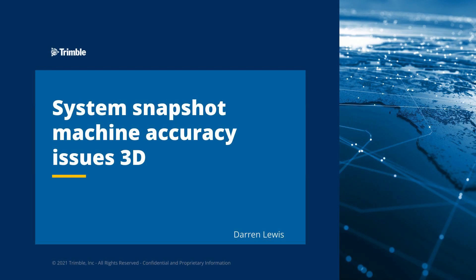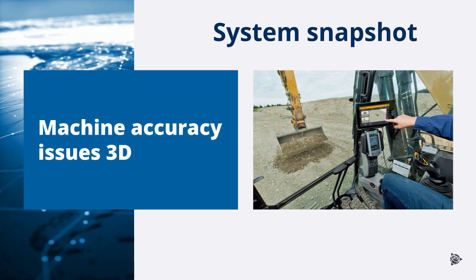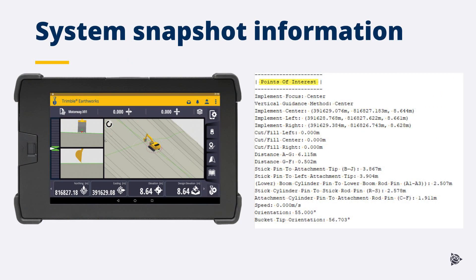In this training, I'll be covering System Snapshot Machine Accuracy Issues 3D. When investigating machine accuracy issues in 3D, it is important to understand that providing just a Z-SNAP may not provide all the information needed. A Z-SNAP only provides information where the machine has calculated its position, and from just a Z-SNAP it is not possible to confirm if this calculated position is correct.